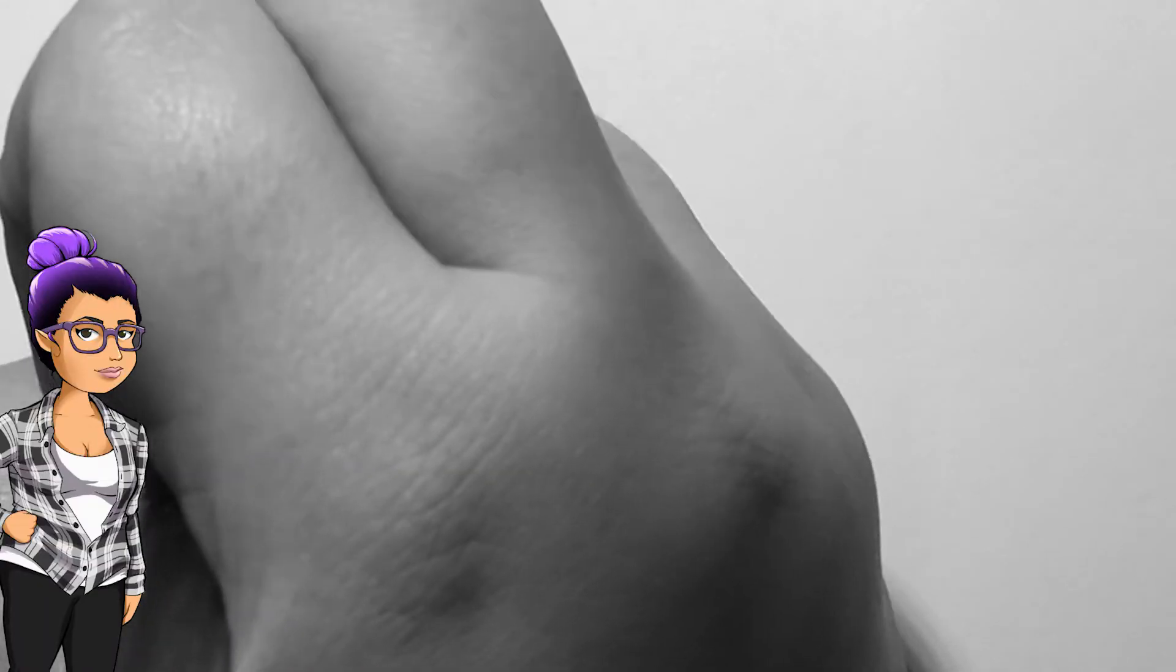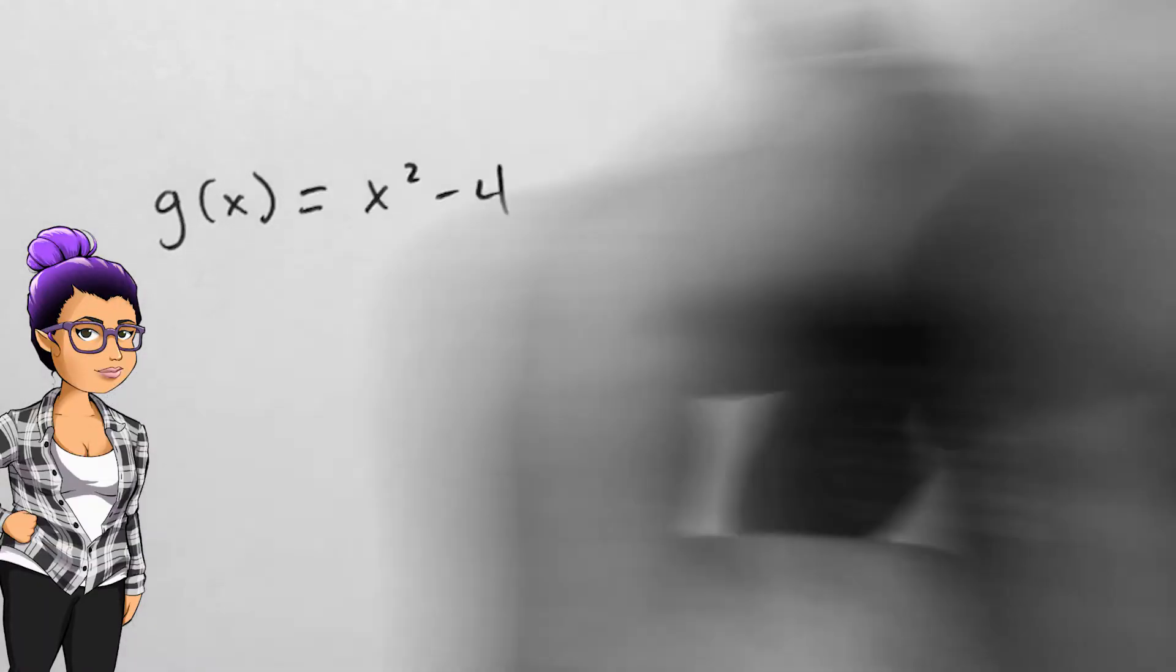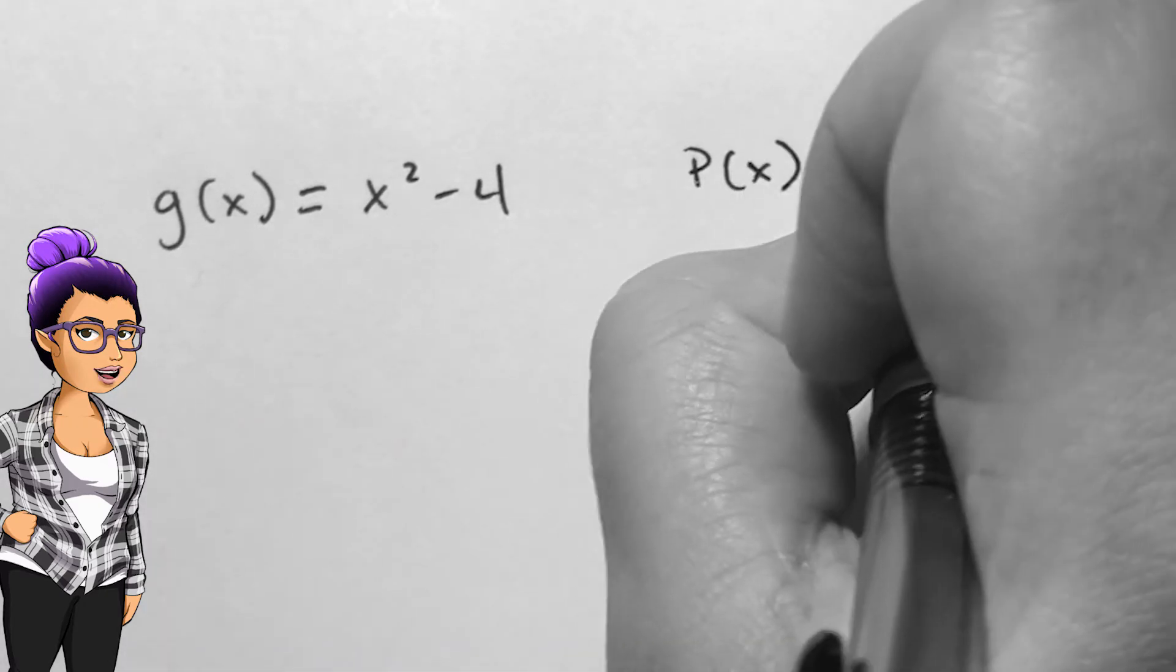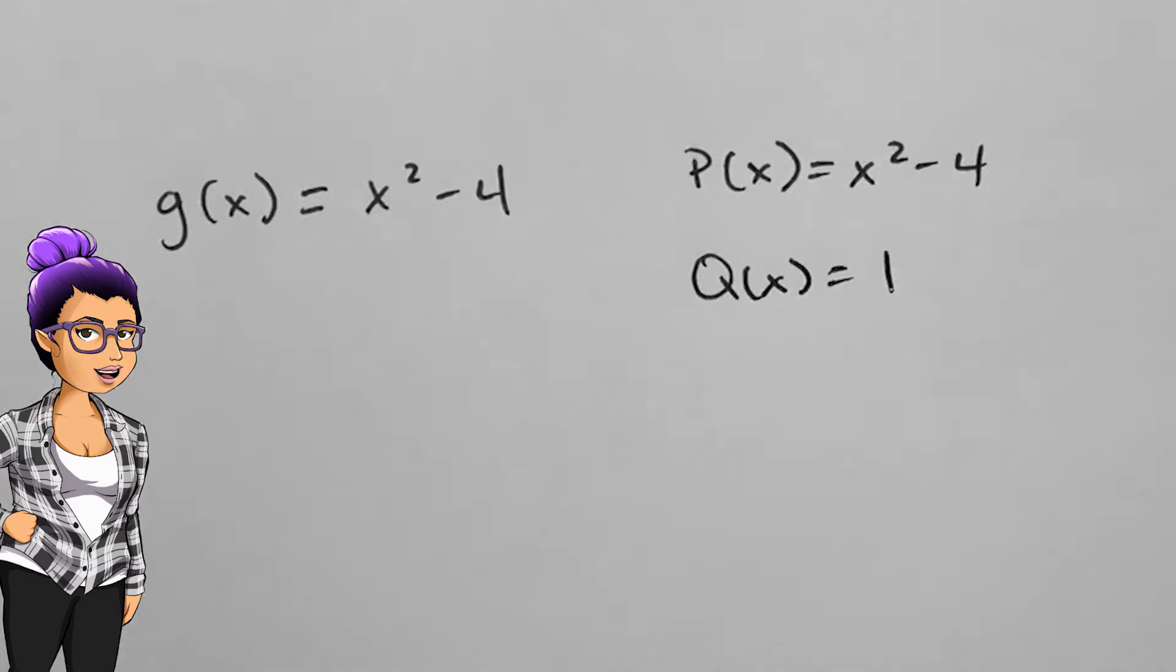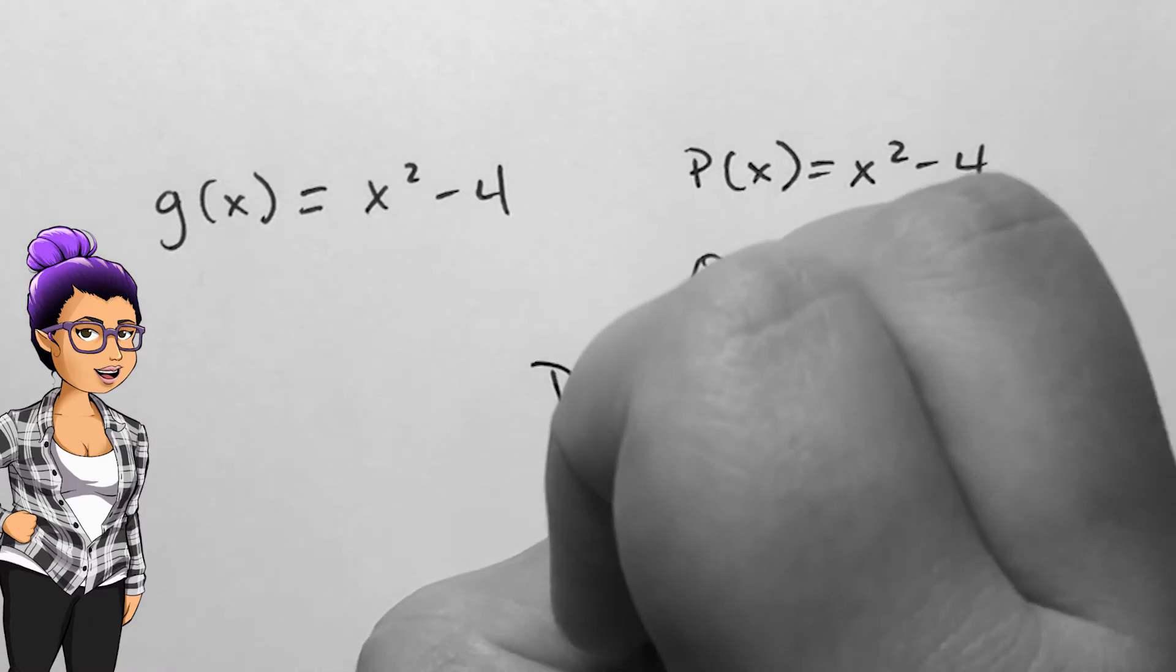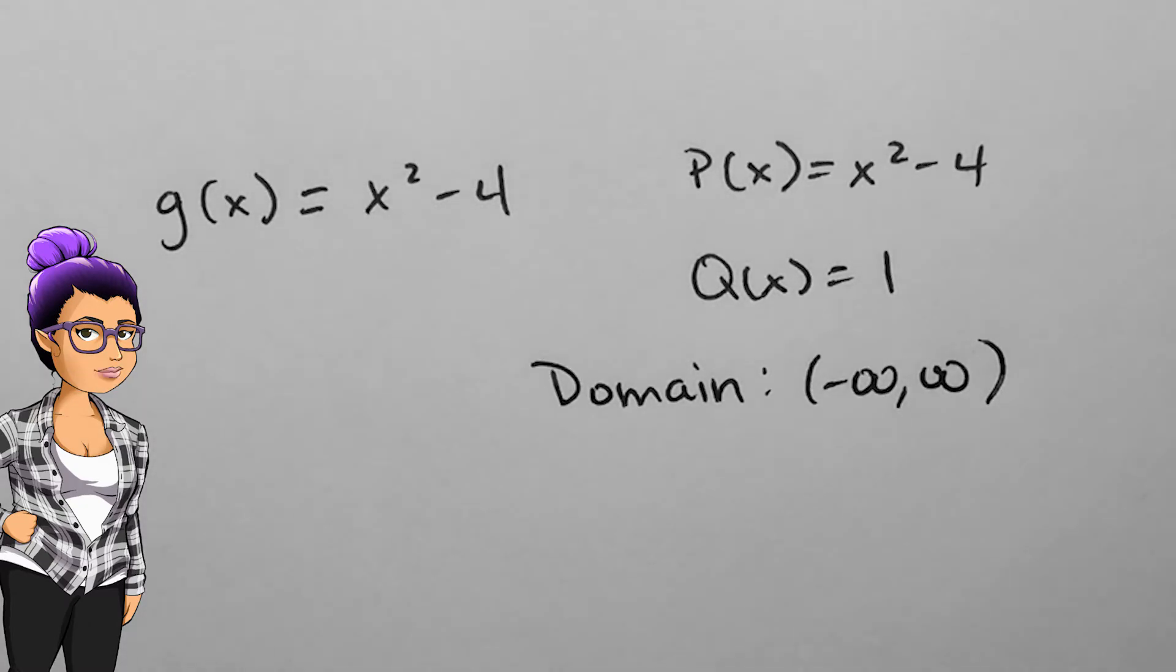If g of x is x squared minus 4, we are looking at a quadratic function. This is also a rational though, since the numerator is a polynomial and the denominator is a constant, also a polynomial. It has domain of all real numbers.